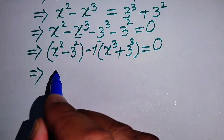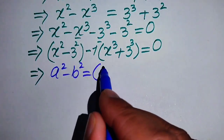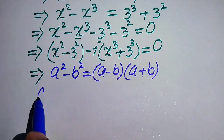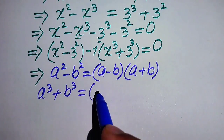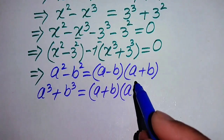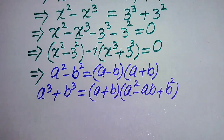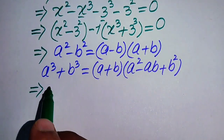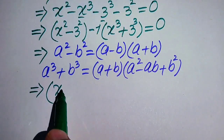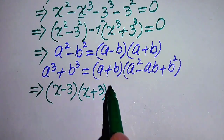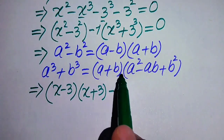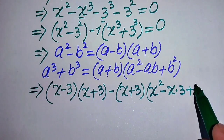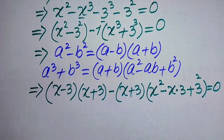We need two formulas. First: a squared minus b squared equals (a minus b)(a plus b). Second, the sum of cubes: a cubed plus b cubed equals (a plus b)(a squared minus ab plus b squared). Applying these, x squared minus 3 squared becomes (x minus 3)(x plus 3), and x cubed plus 3 cubed becomes (x plus 3)(x squared minus 3x plus 9). The equation becomes (x minus 3)(x plus 3) minus (x plus 3)(x squared minus 3x + 9) = 0.